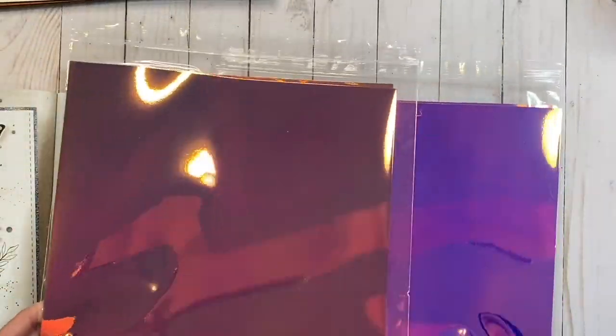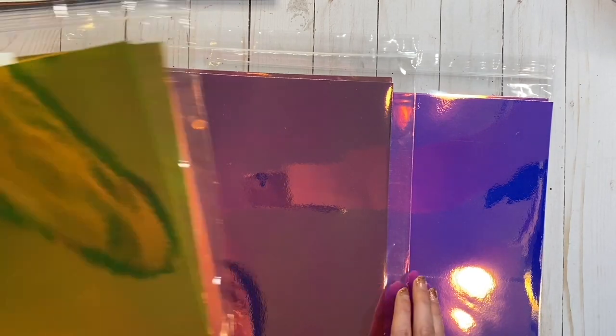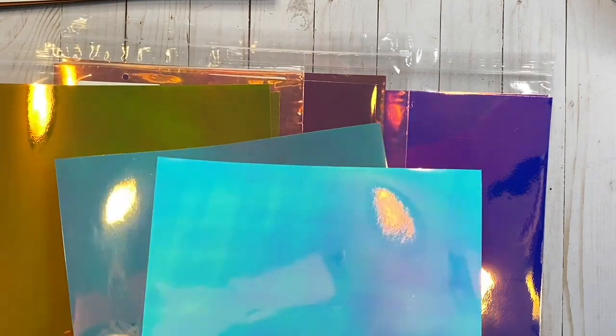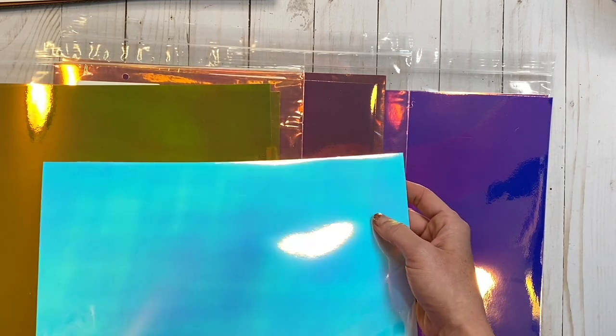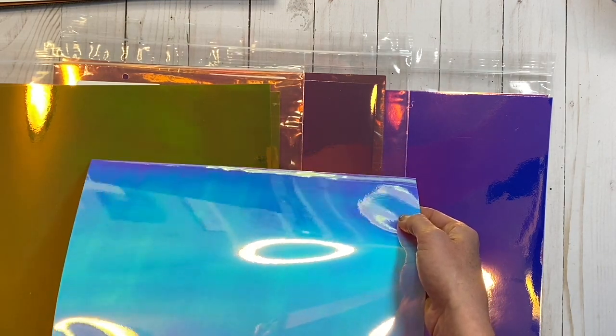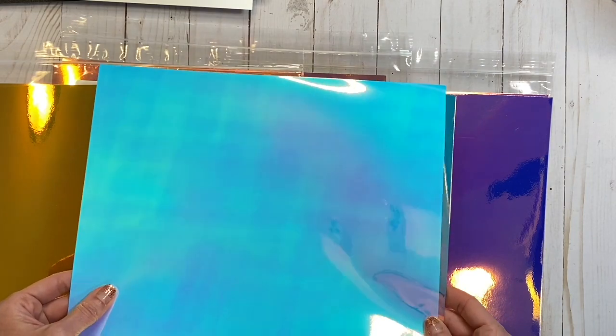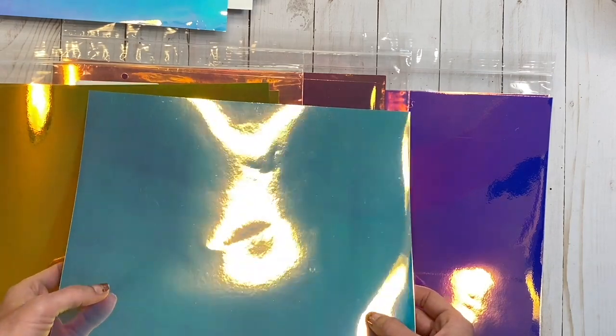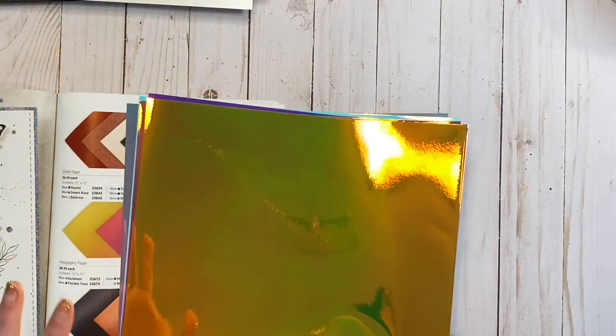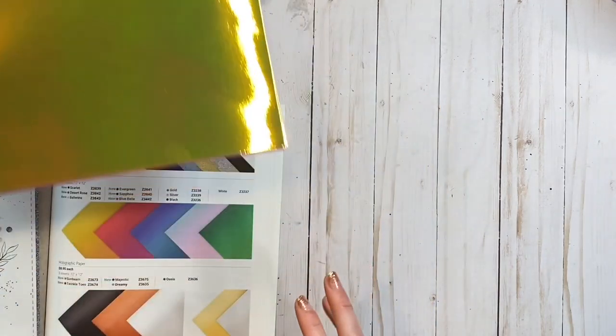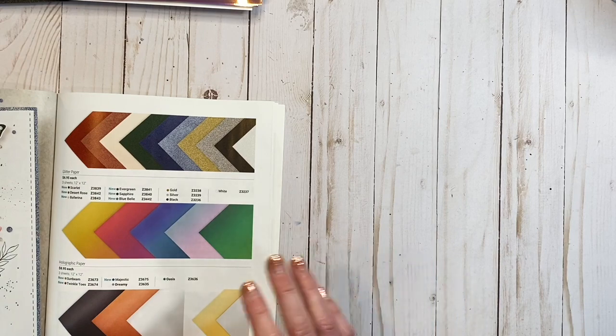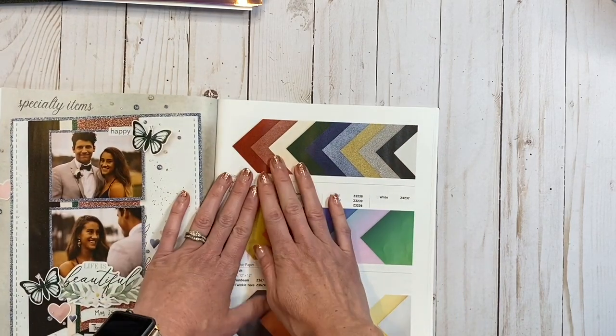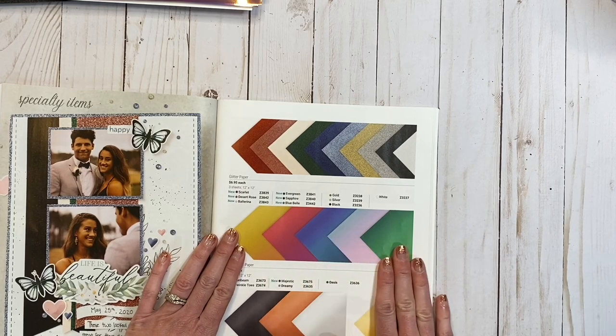They're just gorgeous, and I've been having so much fun with them, and then I thought I would also compare them to the Oasis and the Dreamy that we already have. You can see how different those are. So the Dreamy really is more of that iridescent. It picks up lighter pinks and purples, and it picks up whatever color it's with as well, but it's more of your iridescent. And then the Oasis has more of a green tinge to it, maybe a green with some blue.